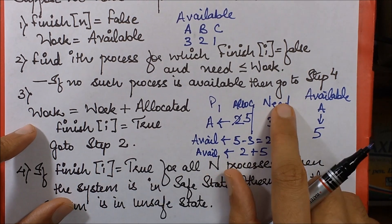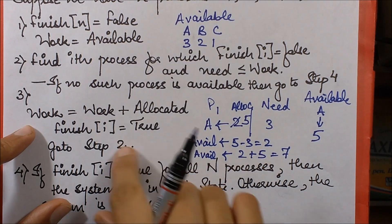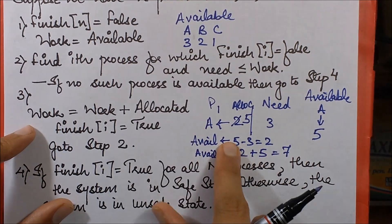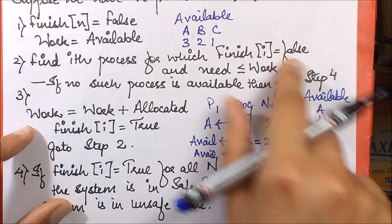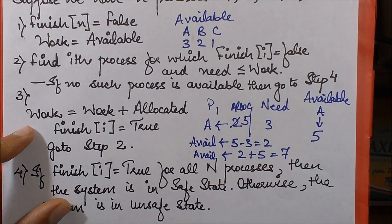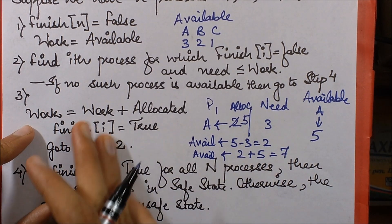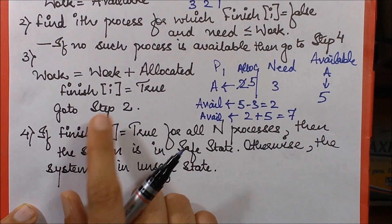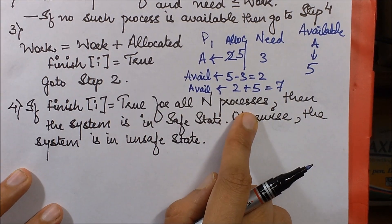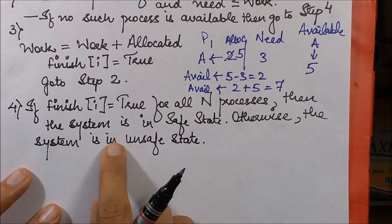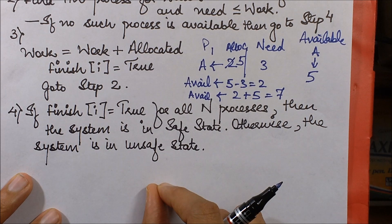In this manner, we try to find a sequence in which we can fulfill the need of each and every process. After processing all processes, we reach step four. If Finish[i] is true for all n processes, the system is in a safe state; otherwise, it is in an unsafe state. The order in which we processed those processes gives us the safe sequence.